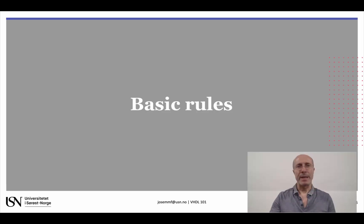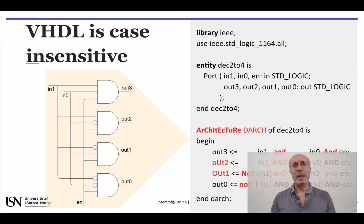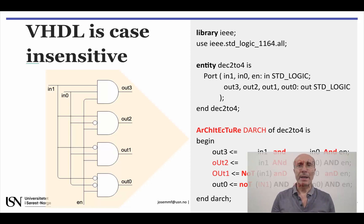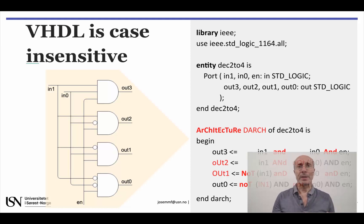Basic rules, then. Let's revisit the design of the 2-to-4 decoder. Let me briefly explain the scope of the entity and architecture sections that you will always find in the VHDL design file. The entity describes the types of inputs and outputs used in the circuit, and the architecture describes what the circuit does. So, entity is the interface and architecture is the function. You will notice that upper and lowercase letters were used randomly in this description.